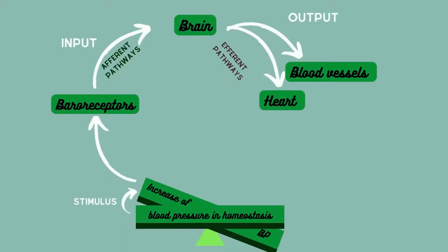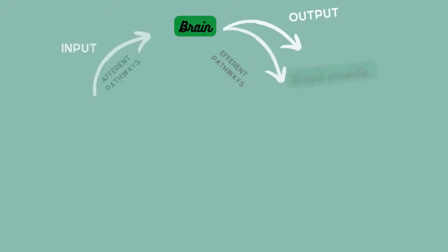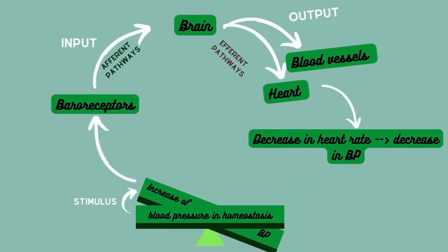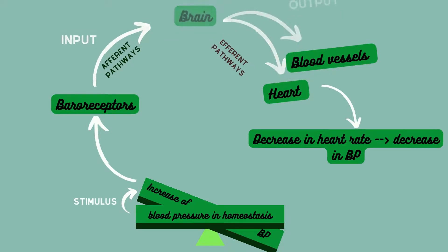After the interpretation, the brain sends the response via nerve impulses to the effectors, which are the heart and blood vessels. The heart rate decreases, causing a decrease in blood pressure. The blood pressure continues decreasing until it reaches its normal level. Hence, the homeostasis response is achieved.